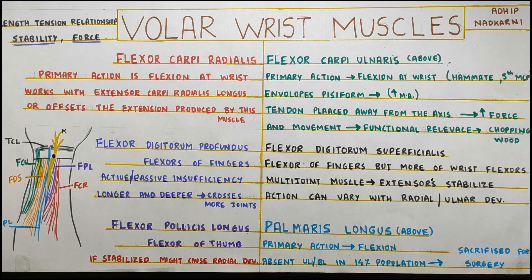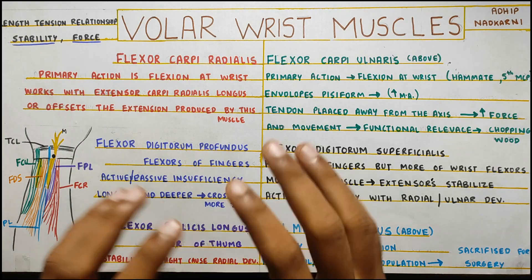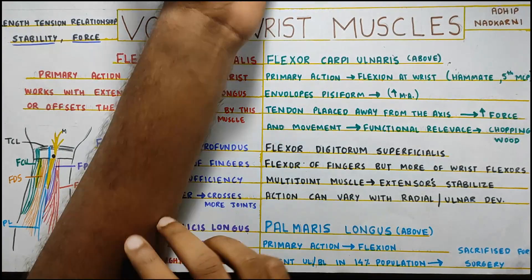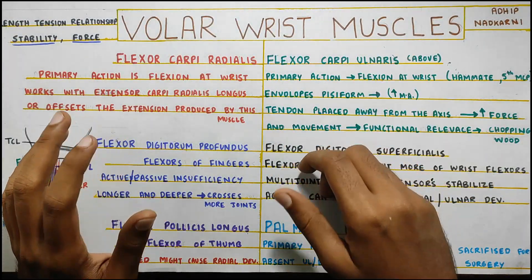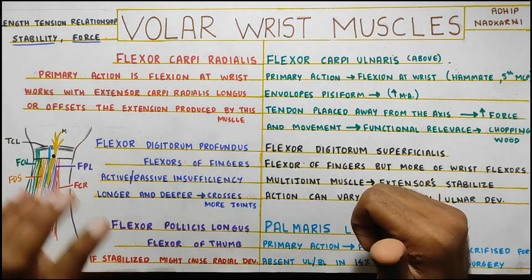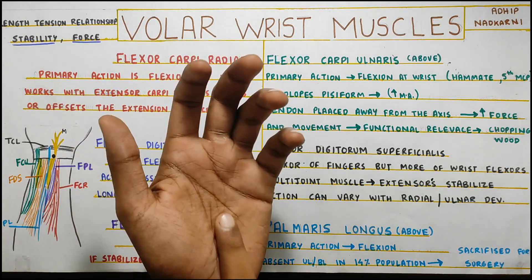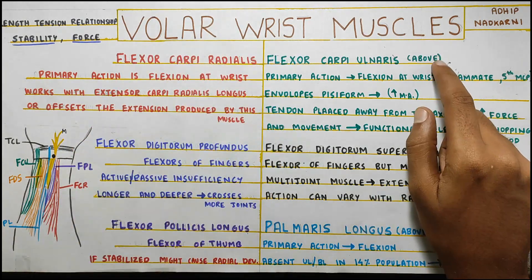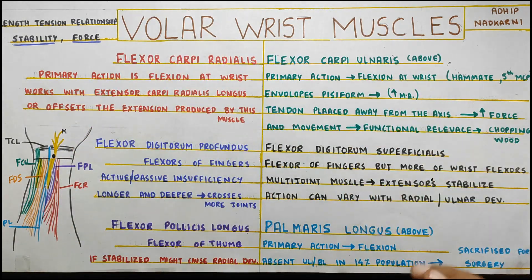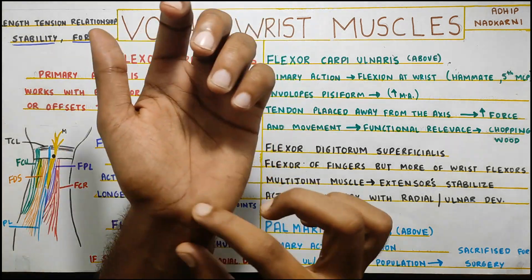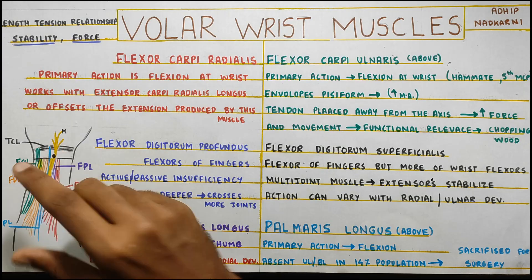In this video, we are going to talk about the volar wrist muscles — that is basically the flexors of your wrist joint. We have six muscles totally, and two of them pass above your wrist joint: that is your flexor carpi ulnaris and your palmaris longus. When I say above, it means above the flexor retinaculum that is present at the wrist joint.